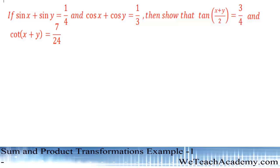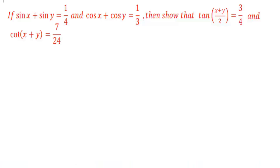Hello friends, in this video we are going to discuss an example. If sin x plus sin y is equal to 1 by 4 and cos x plus cos y is equal to 1 by 3, then show that tan of (x plus y) divided by 2 is equal to 3 by 4, and prove that cot(x plus y) is equal to 7 by 24.